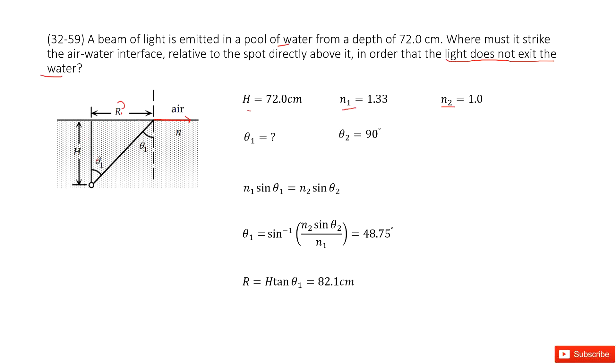You see H is given. If we know theta 1, we can know R, because R equals H tangent theta 1. So theta 1 is the incident angle, so we can get the critical angle.